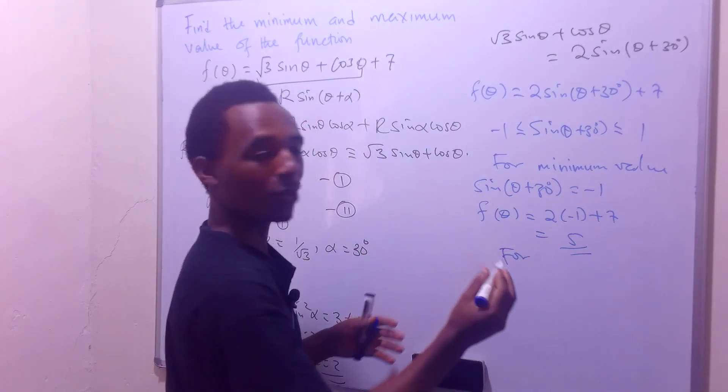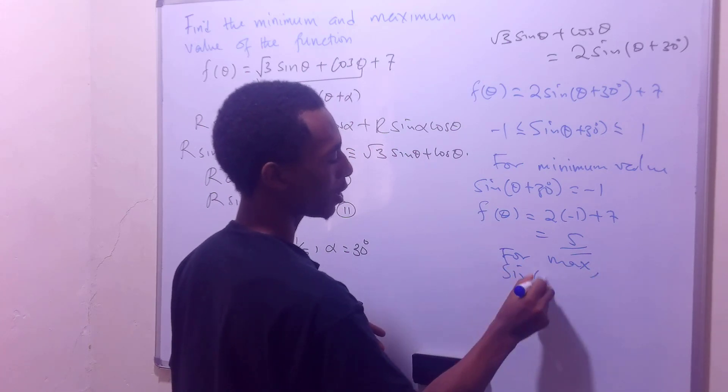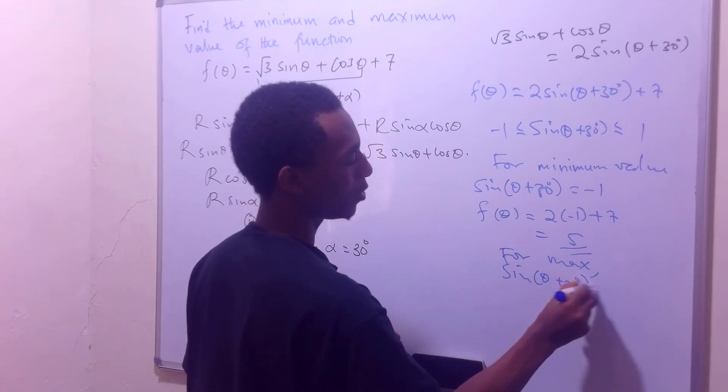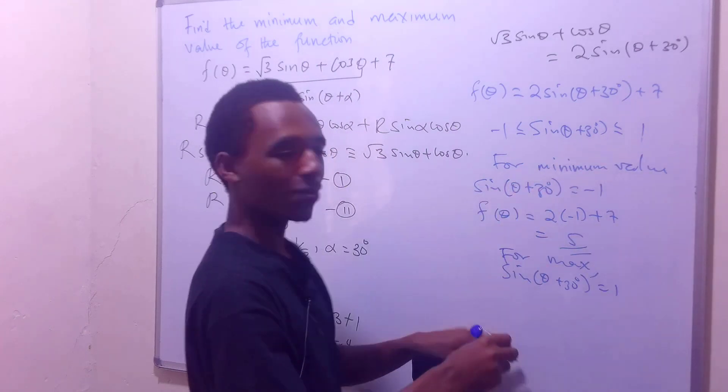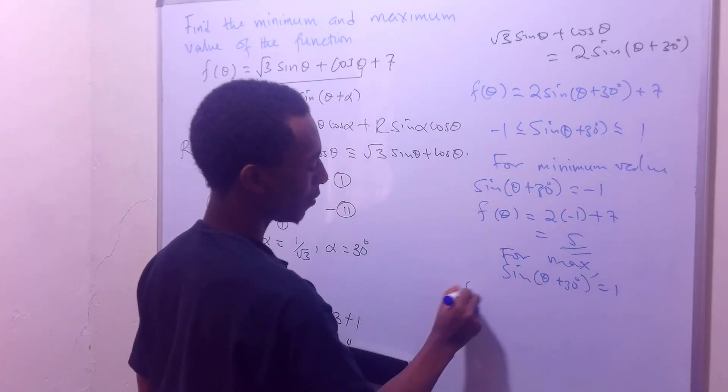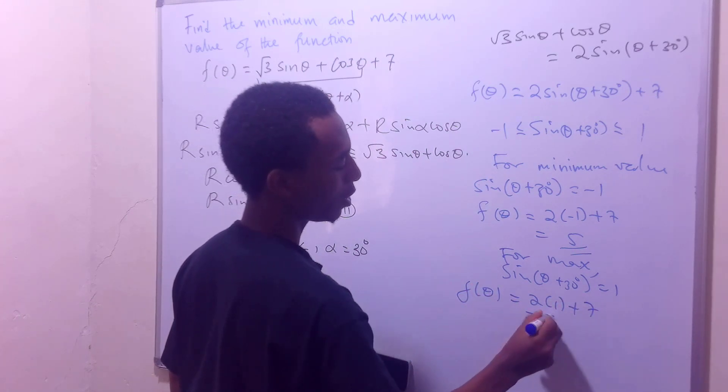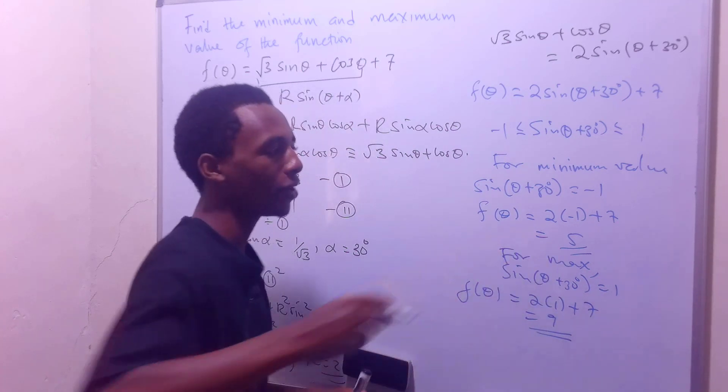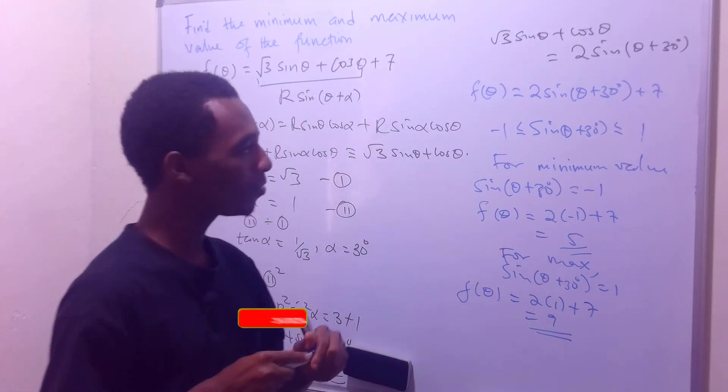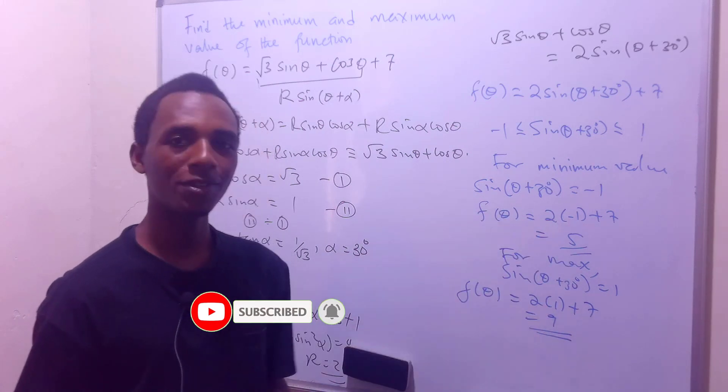And of course, for the maximum value, we'll take sin(θ + 30°) to be equal to its maxima, which is 1. So if I plug that in here, I'll have f(θ) = 2(1) + 7, which is 9. So there we'll have it. The minimum value of this function is 5 and the maximum value is 9.